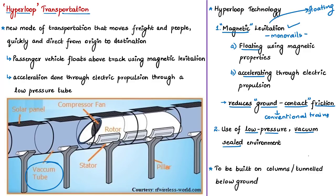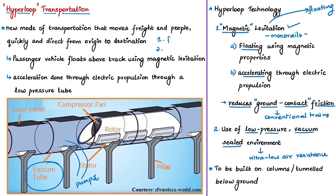The second key feature is the use of a low-pressure, vacuum-sealed environment. Air inside the tube is removed using vacuum pumps, resulting in ultra-low air resistance when the vehicle moves. In conventional transportation — trains, buses, cars — there are two major resistances: ground-contact friction and air resistance. In the Hyperloop, both are reduced to an ultra-low level, which is why the speed is so much higher than conventional transport.